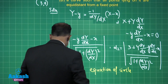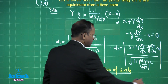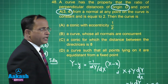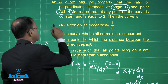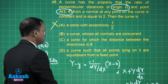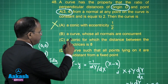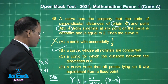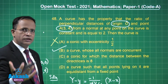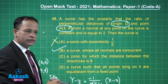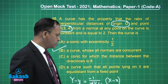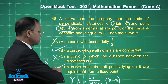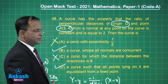Once we get the equation of the circle, looking at the options: eccentricity is never going to be ½ for a circle, so that option is incorrect. A curve whose all normals are concurrent — that is option B and is correct. Also, a circle satisfies: all points lying on it are equidistant from a fixed point. So option D is also correct. Therefore options B and D are the correct answers.